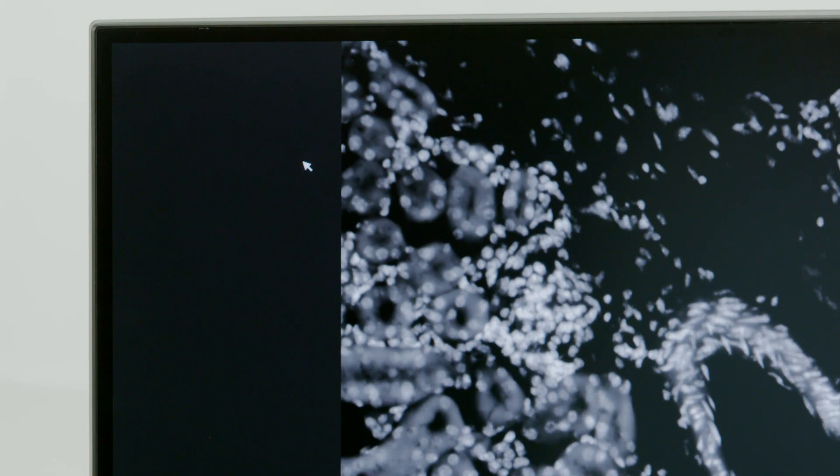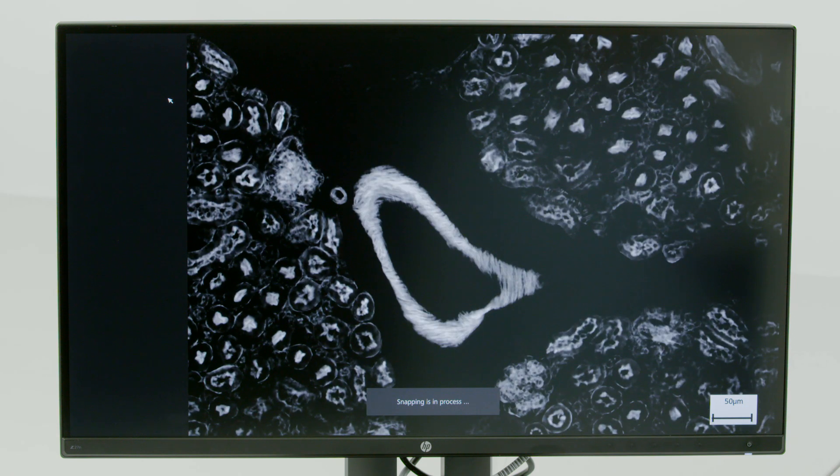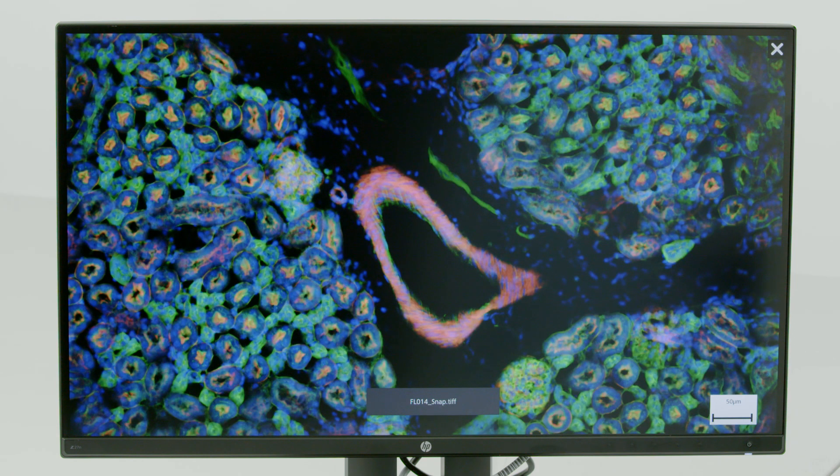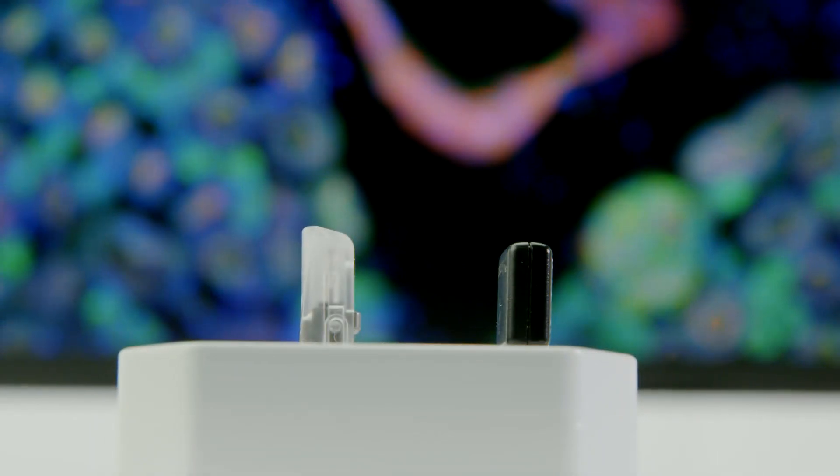Press SNAP. Your system takes over. And there you have it. Your overlaid multi-channel fluorescent image, including scale bar, is now ready and waiting on your USB stick.